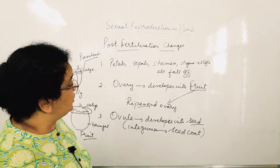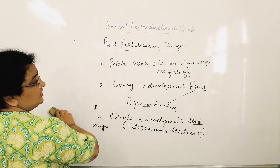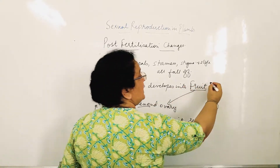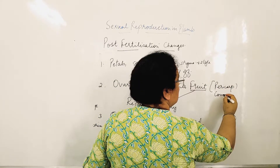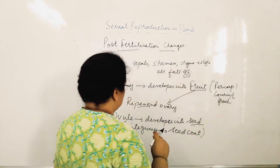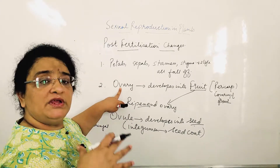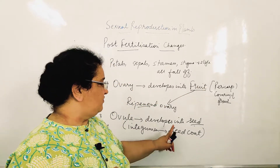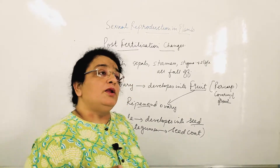Ovary changes into fruit. The covering of the ovary becomes the covering of the fruit, and that is known as the pericarp. What is pericarp? It is the covering of the fruit. And the integument of the ovule converts into the seed coat. So these are the key post-fertilization changes.